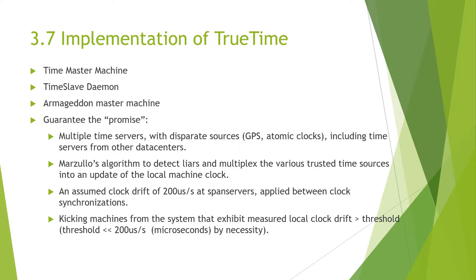Those are the most important guarantees of Spanner. The Spanner paper achieved this by a combination of means: first, using multiple time servers with disparate sources, including time servers from other data centers; second, using Marzullo's algorithm to detect liars and multiplex the various trusted time sources in an update to the local machine; third, using an assumed clock drift of 200 microseconds per second on span servers and applying between-clock synchronization; lastly, guaranteeing to kick machines from the system that exhibit a measured local clock drift greater than a threshold much smaller than 200 microseconds per second.